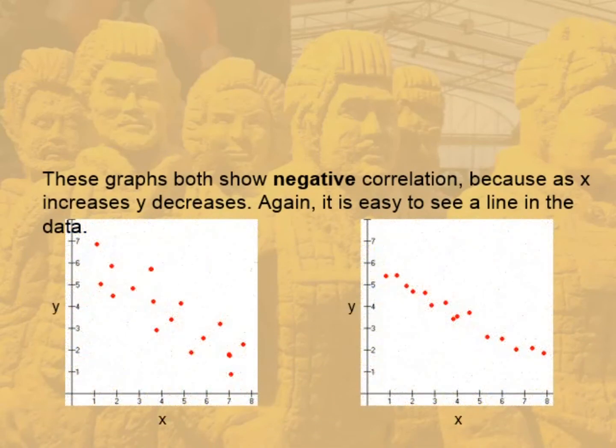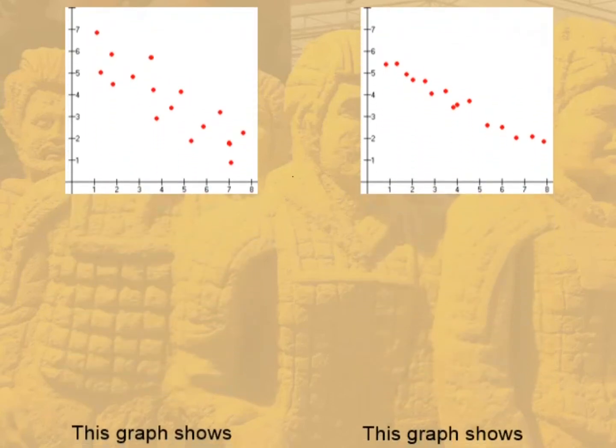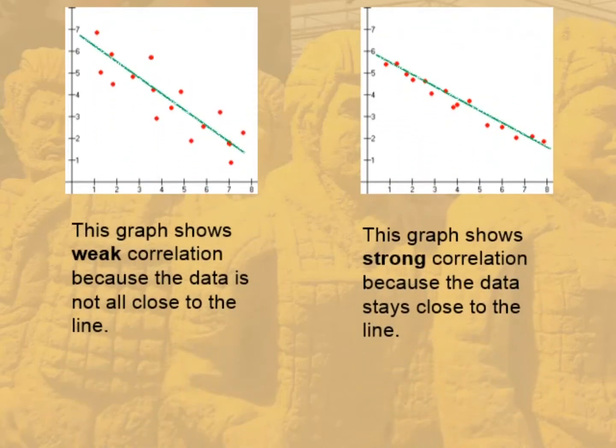Here is negative correlation. As you can see, it's just a negative gradient on our line. As X increases, Y decreases — X variable goes up, Y variable goes down. When the data is scattered around the line, it is weak correlation, but when the data stays very close to the line, that is strong correlation.